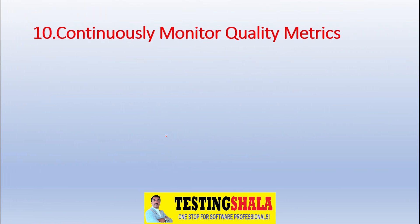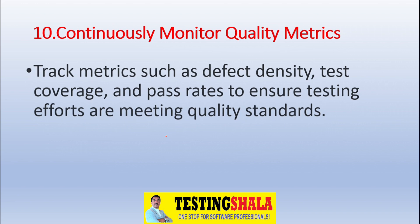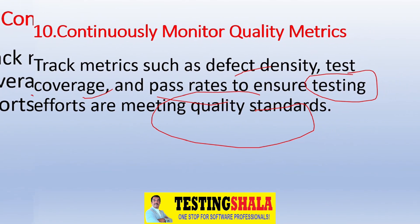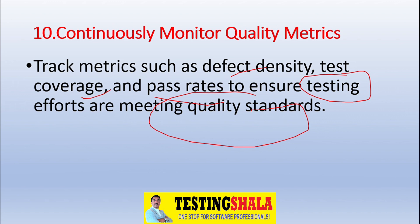The tenth method is continuously monitoring quality metrics, which helps guarantee delivery within a tight schedule. We should keep tracking testing metrics like defect density, test coverage, and pass rate to ensure testing efforts are meeting quality standards. Monitoring these metrics helps ensure we can meet the delivery deadline.